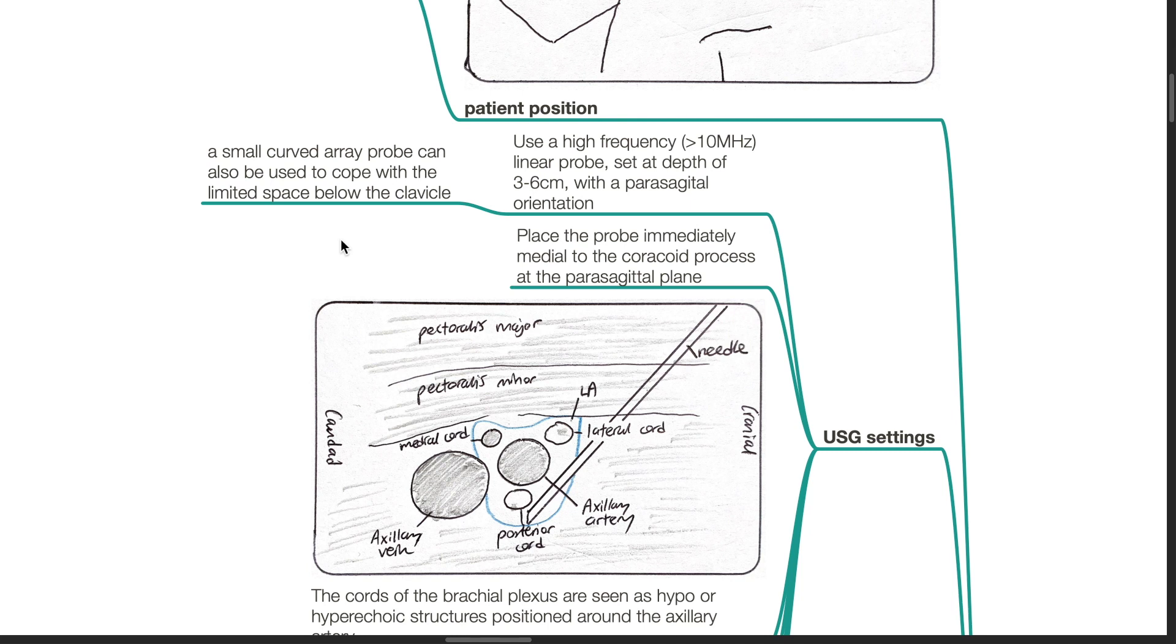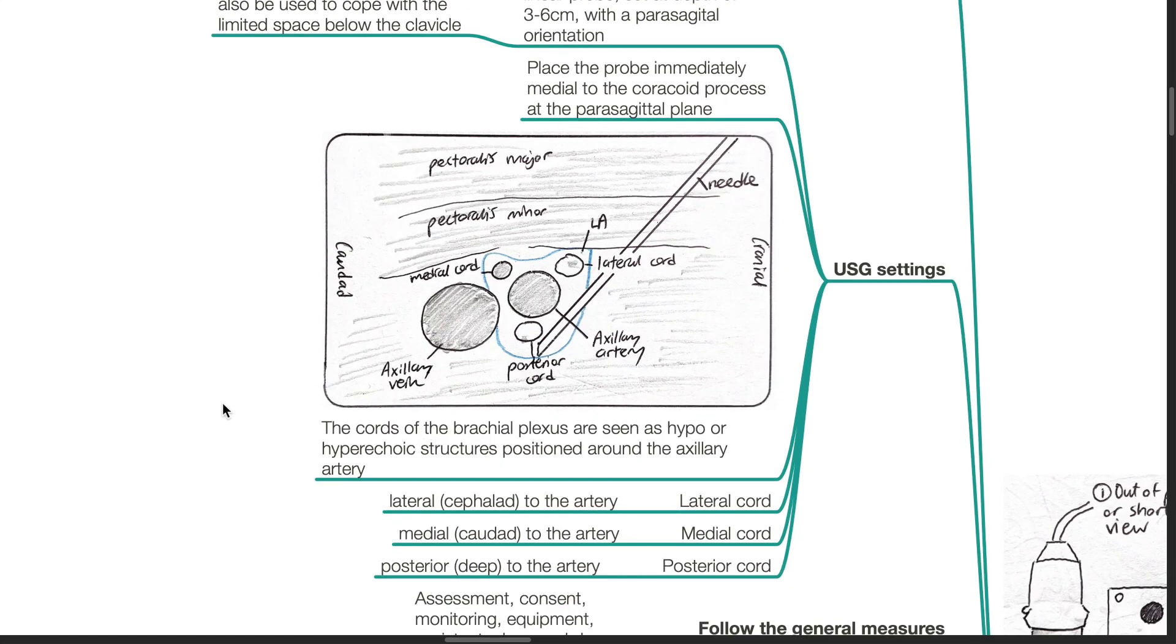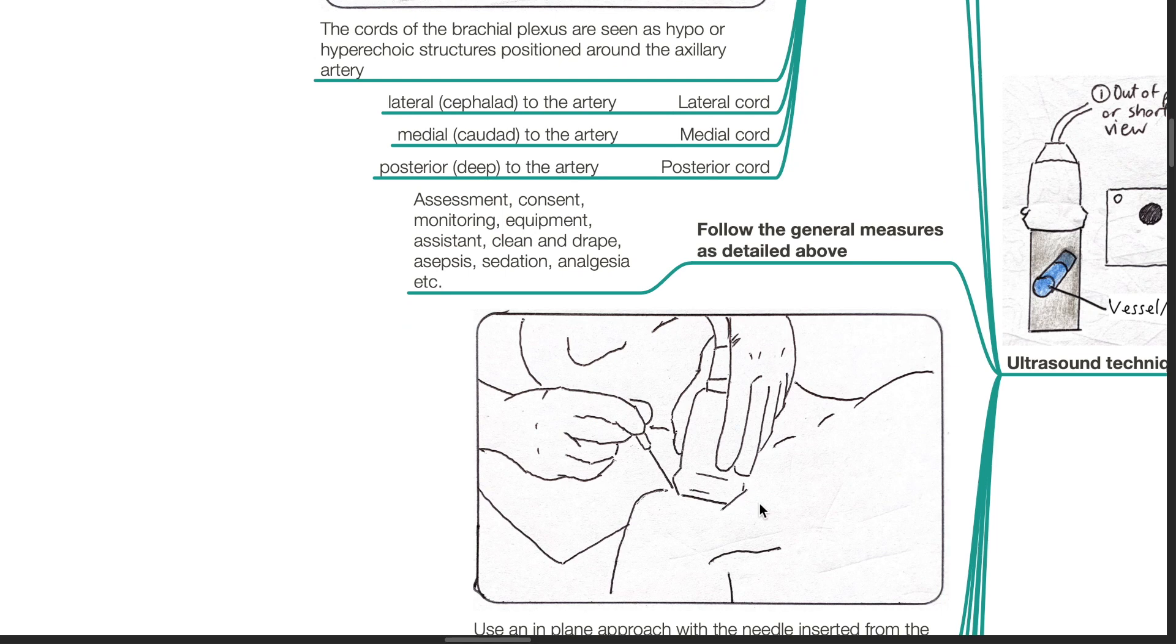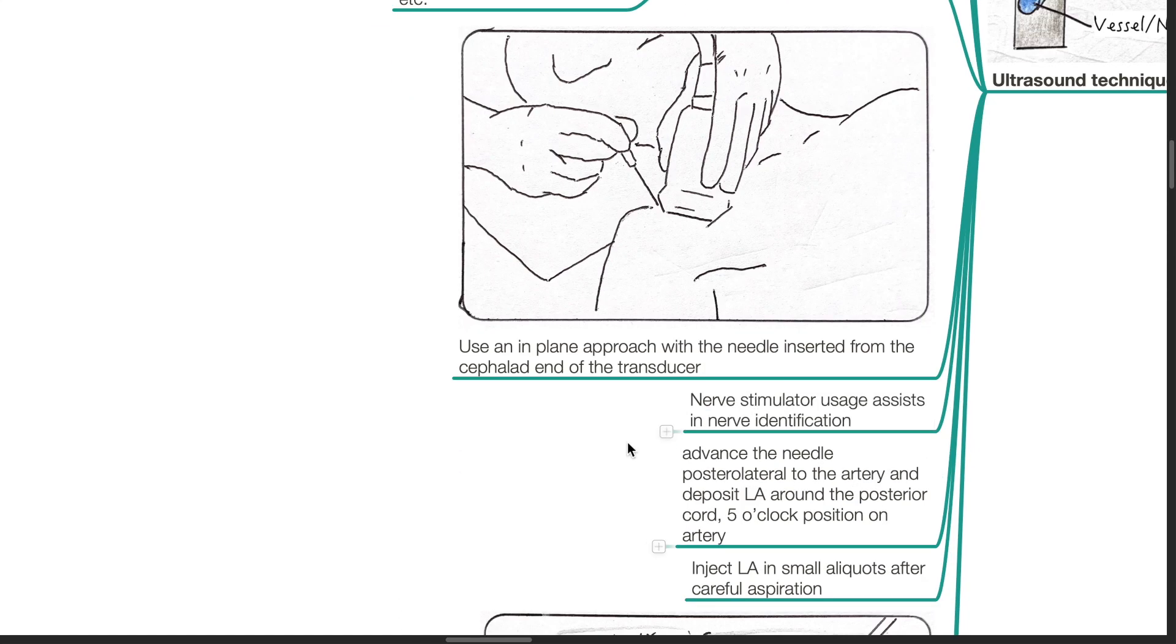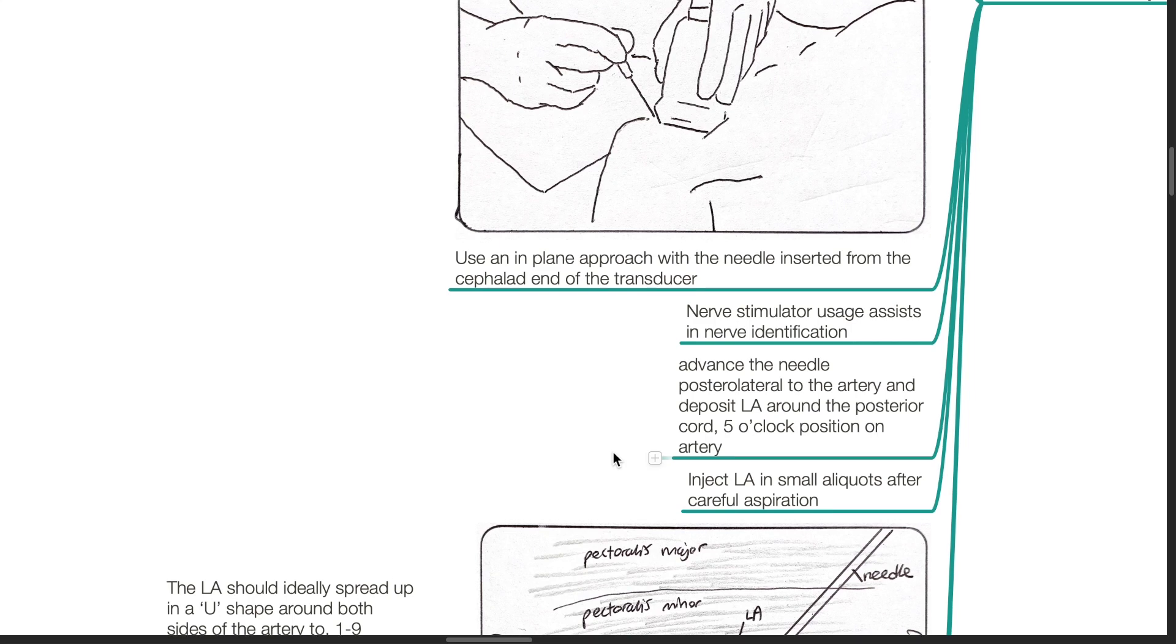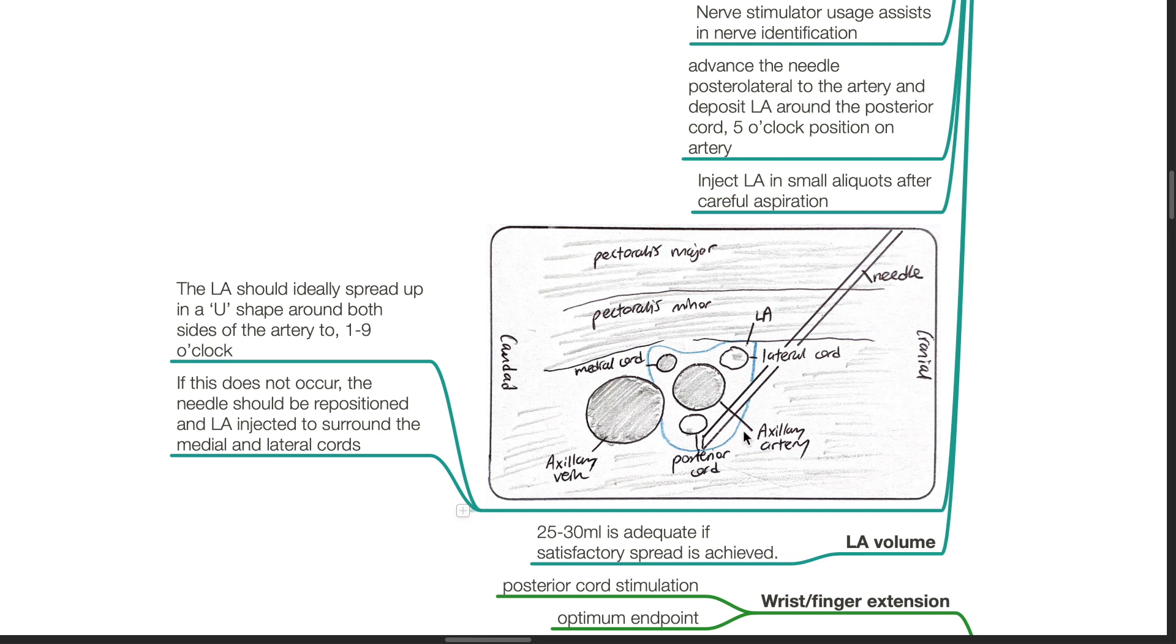Place the probe immediately medial to the coracoid process at the parasagittal plane. The cords of the brachial plexus are seen as hypo or hyperechoic structures positioned around the axillary artery. The lateral cord is lateral or cephalad to the artery. Medial cord is medial or caudad to the artery. Posterior cord is posterior or deep to the artery. Follow the general measures as detailed. Use an in-plane approach with the needle inserted from the cephalad end of the transducer. Nerve stimulator usage assists in nerve identification. Advance the needle posterior lateral to the artery and deposit local anesthetic around the posterior cord, 5 o'clock position on the artery. Inject local anesthetic in small aliquots after careful aspiration. The local anesthetic should ideally spread up in a U-shape around both sides of the artery to 1 and 9 o'clock. If this does not occur, the needle should be repositioned and local anesthetic injected to surround the medial and lateral cords.